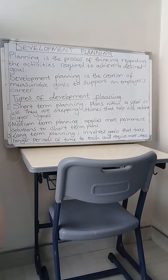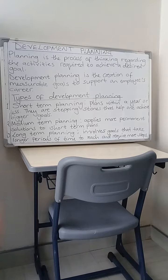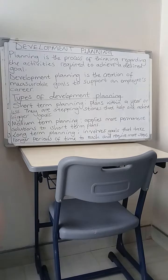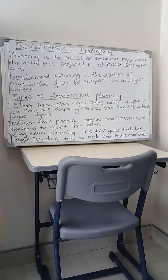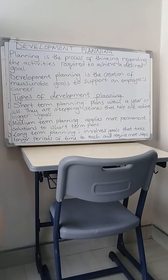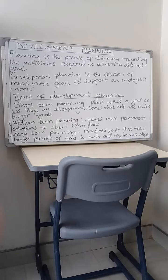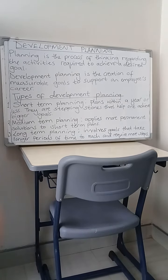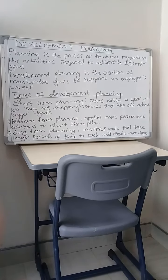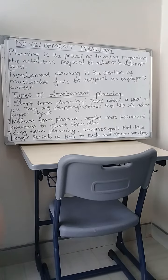Medium-term planning refers to plans that apply more permanent solutions to short-term plans. It is a type of plan that mediates between a short-term plan and a long-term plan. These kinds of plans apply more permanent solutions to short-term plans and sometimes even long-term plans.